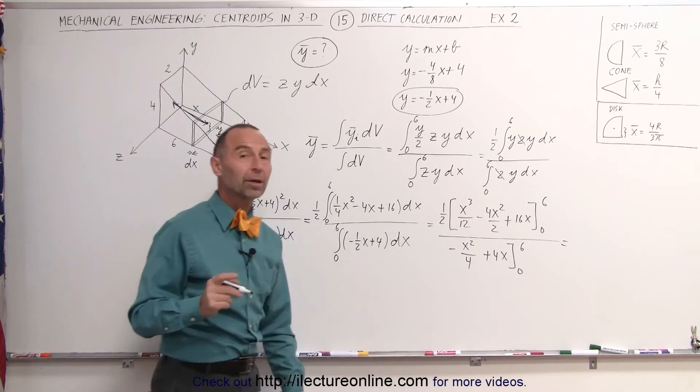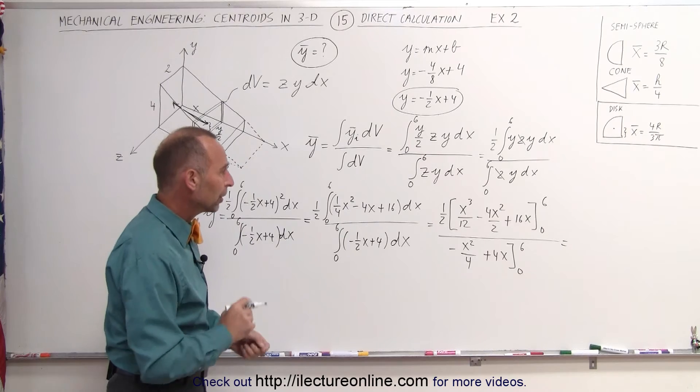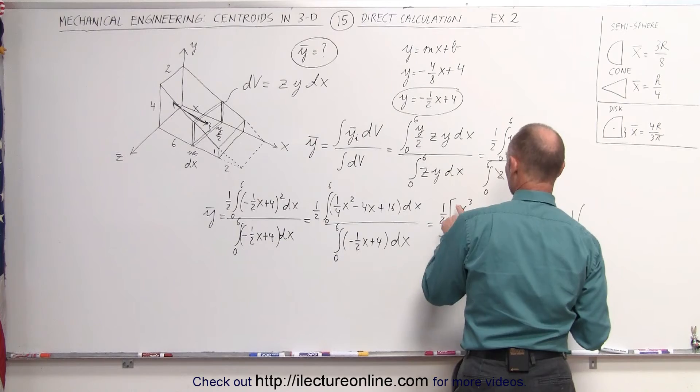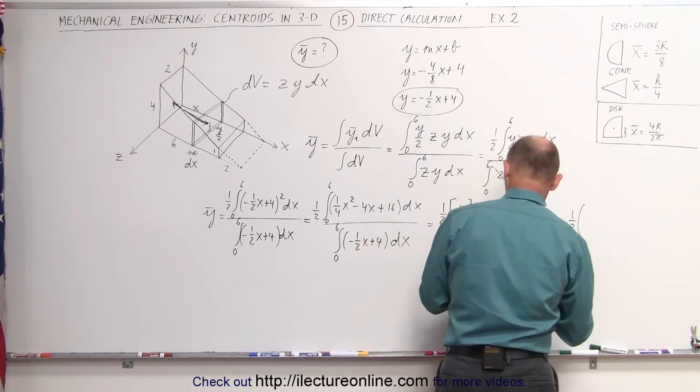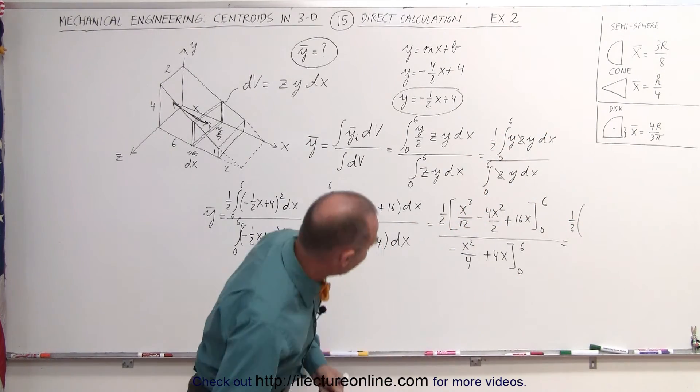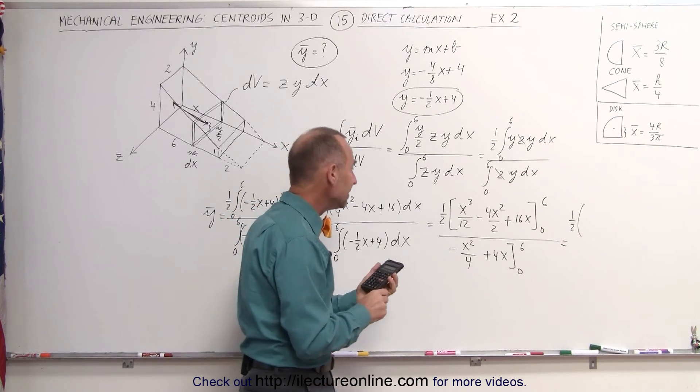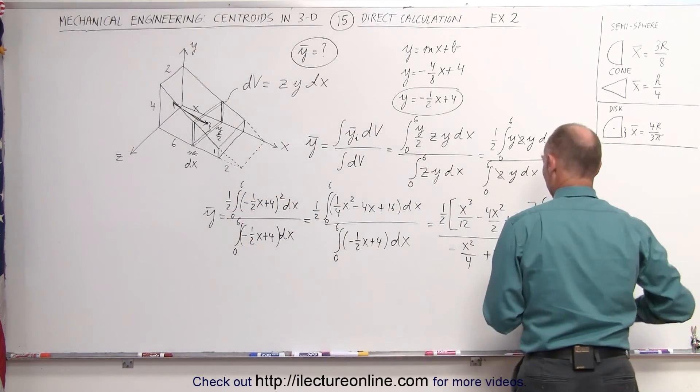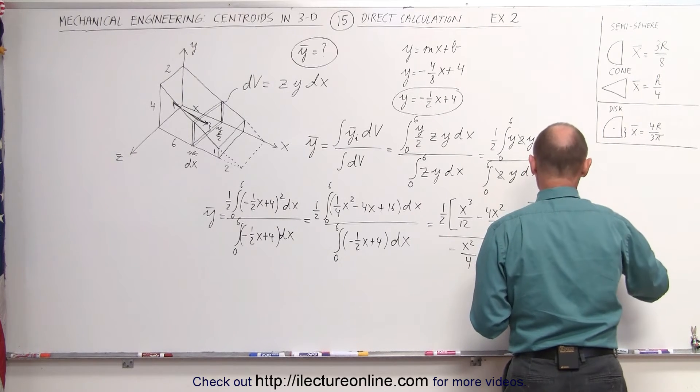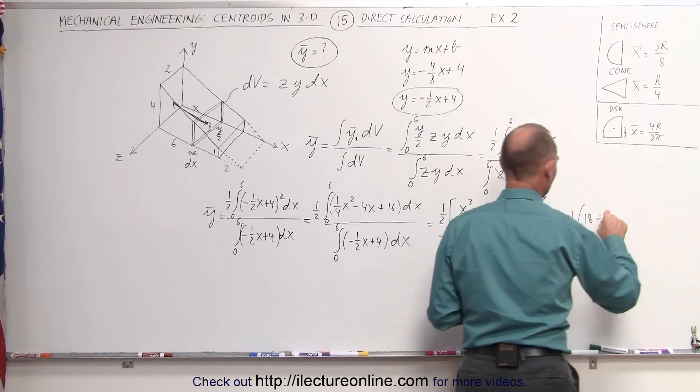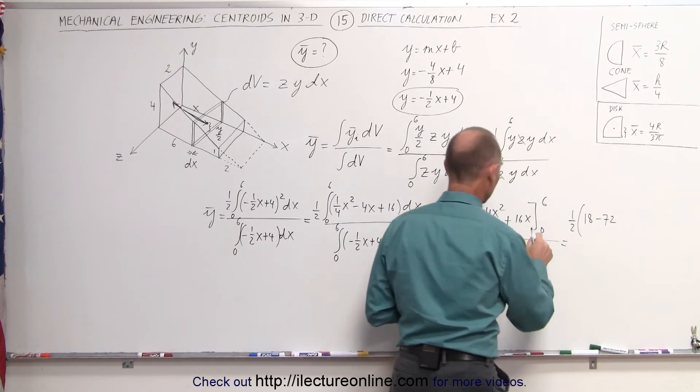Notice we don't have to plug in the lower limit. We do plug in the upper limit and see what we get. That is one-half times, when you plug in a 6 in there, that's 216 divided by 12, 216 divided by 12 is 18. The first term reduces to 18, minus, that's 36 times 2, which is 72.